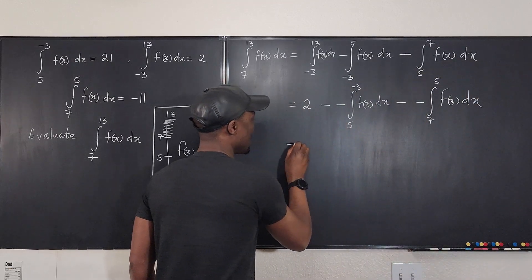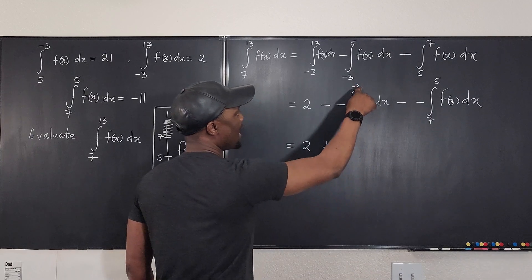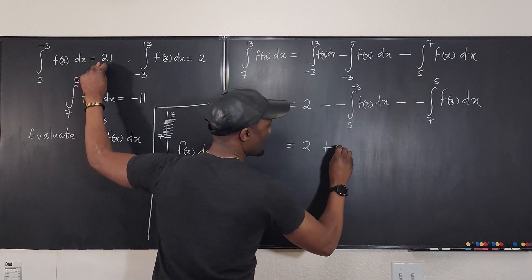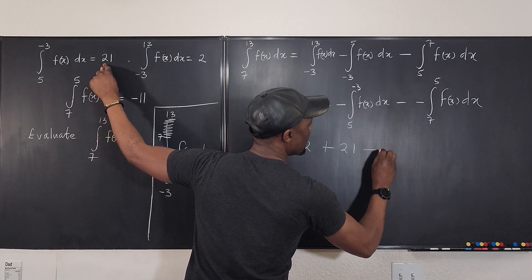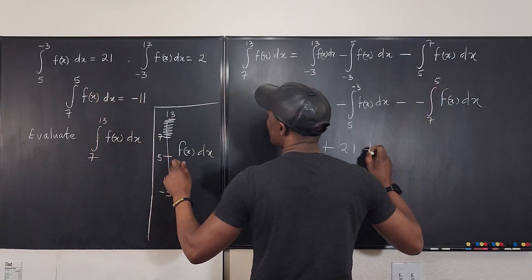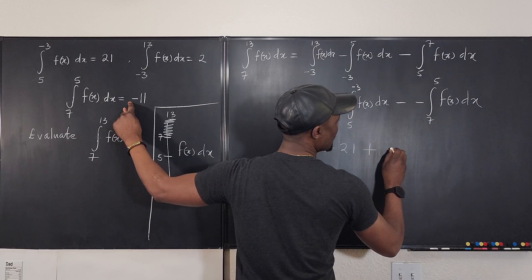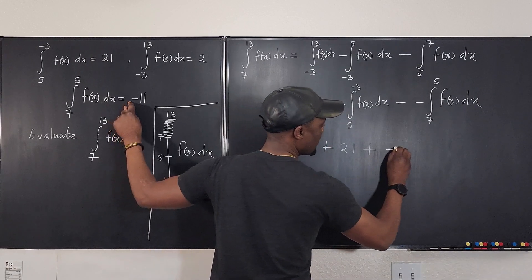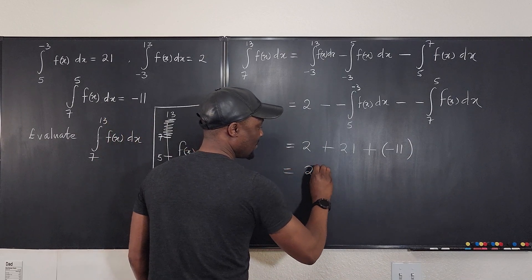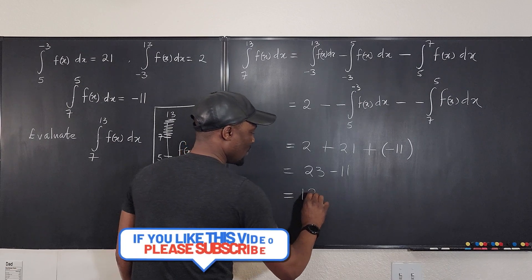And we're almost done. So here we're going to have 2 plus... What is the integral from 5 to negative 3? 21. This becomes plus again. And what's the integral from 7 to 5? Negative 11. So that will be plus minus 11. And our answer is 23 minus 11, which is equal to 12.